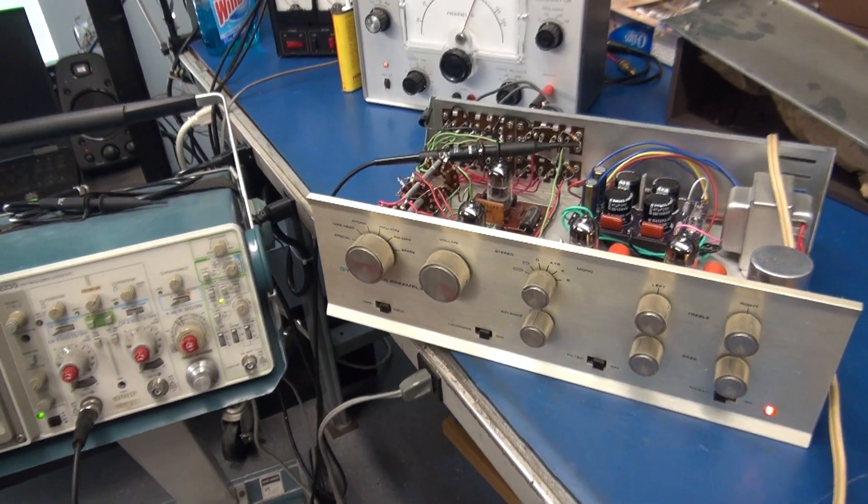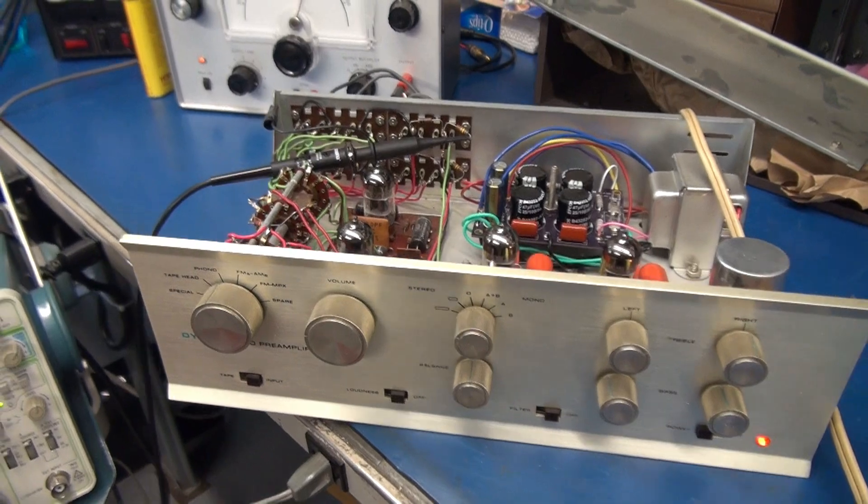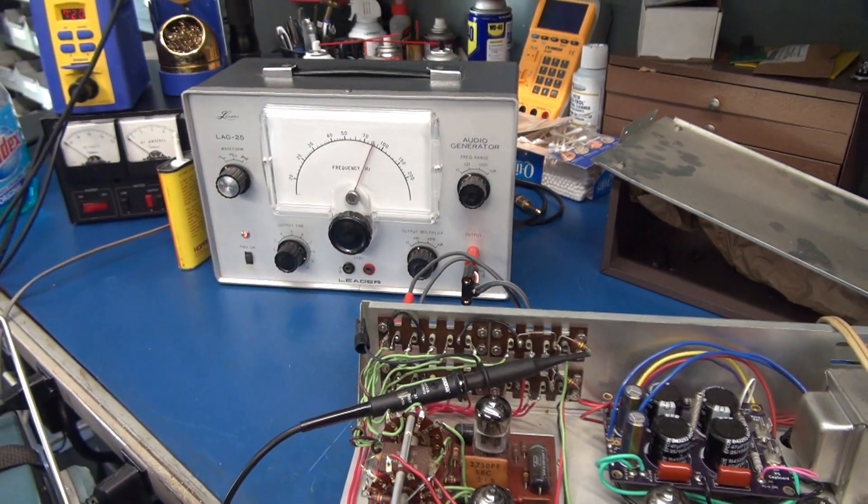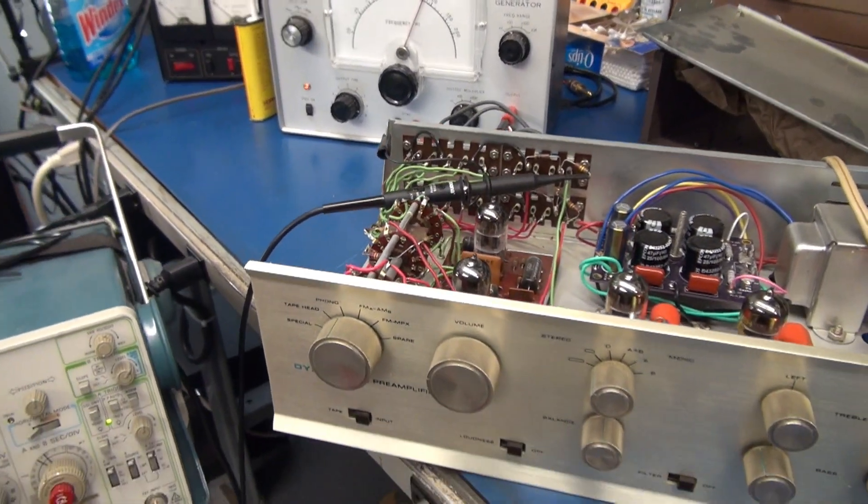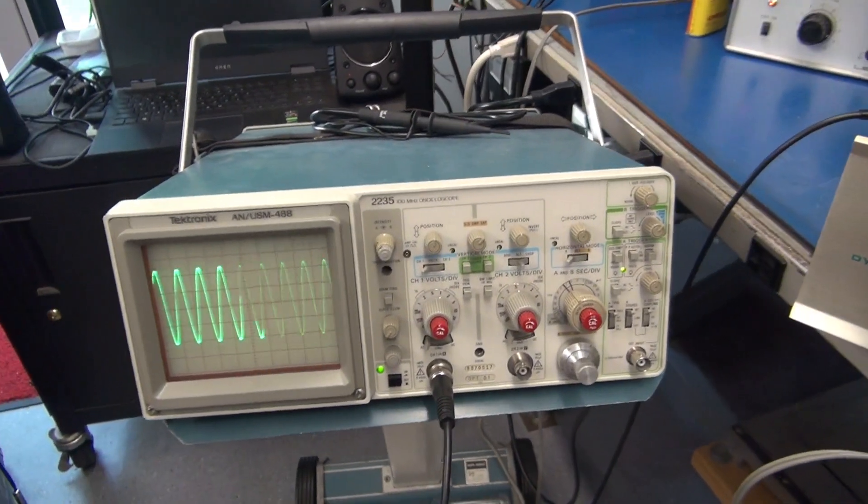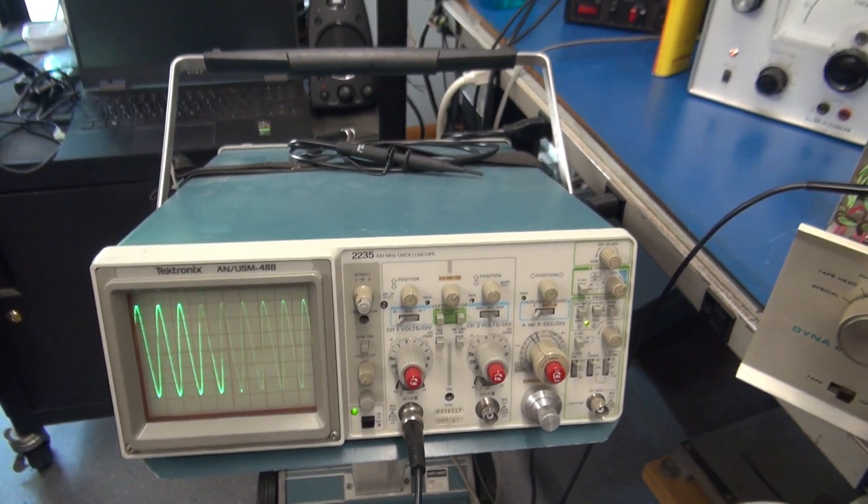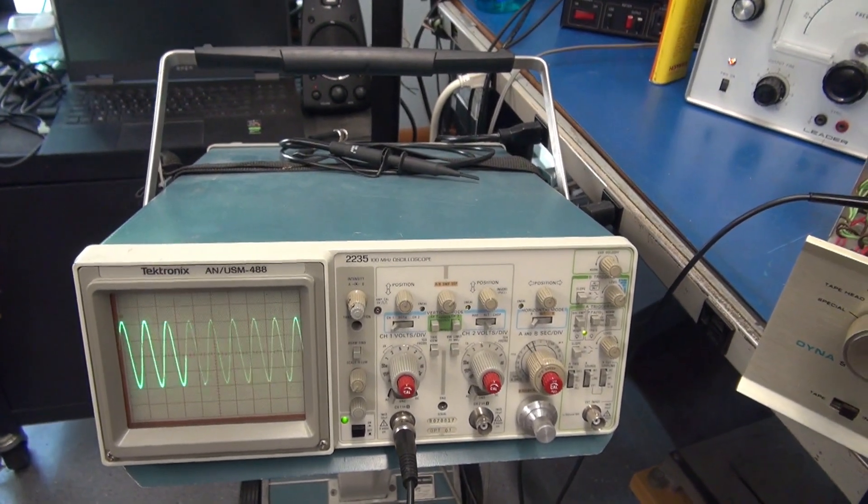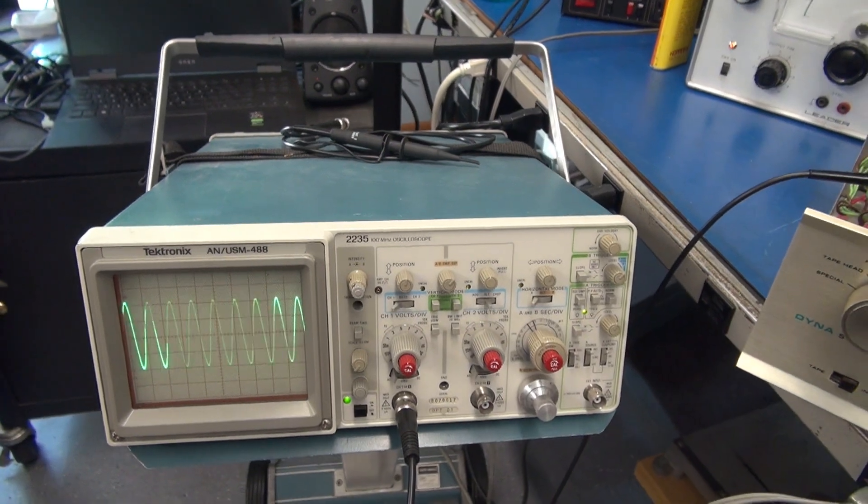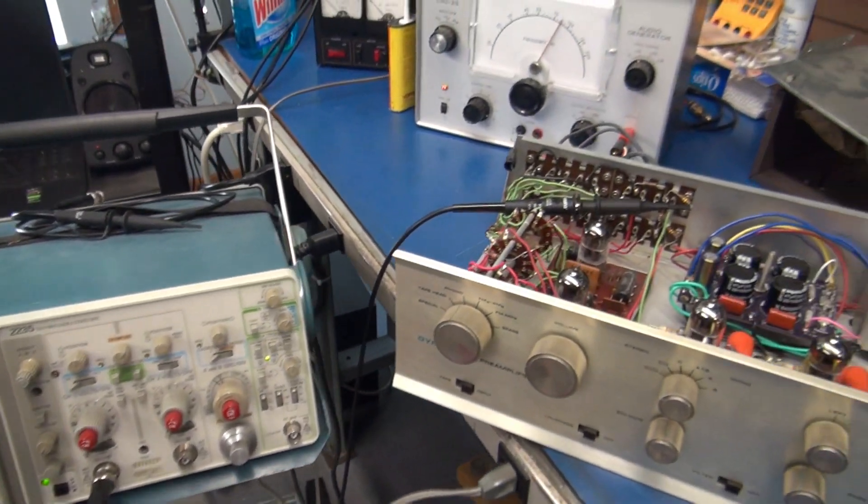Let's take a look at the signal output of the Dyna PAS. I'm using a Leader audio generator as the input, we are in phono, and I'm monitoring on a scope. This is the left channel. My volume adjust. We'll set it about right there, and let's go to the right channel and see if they're equal.